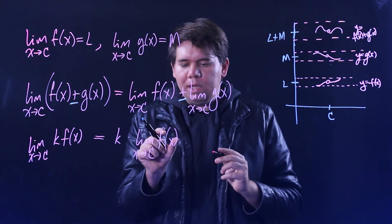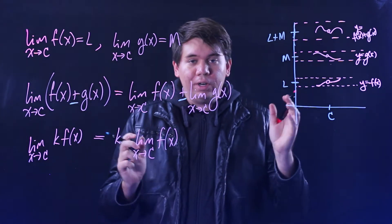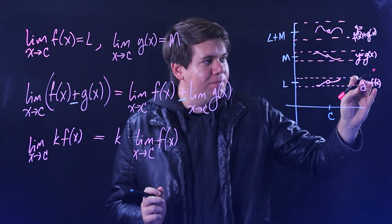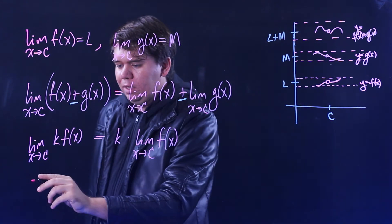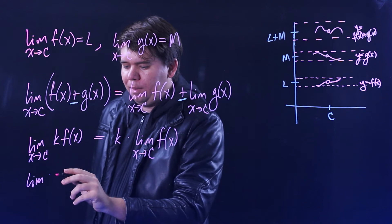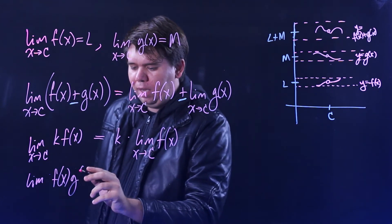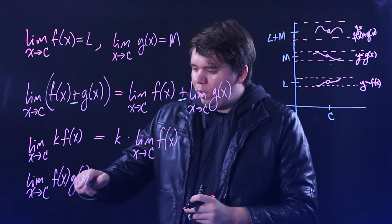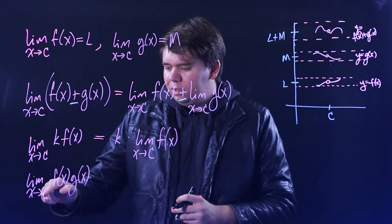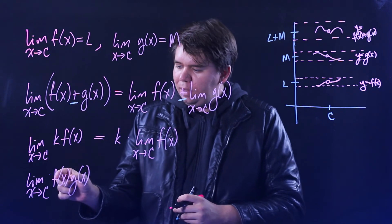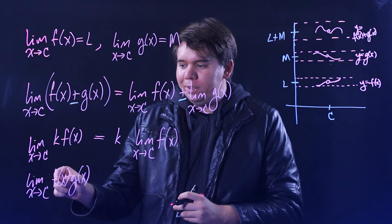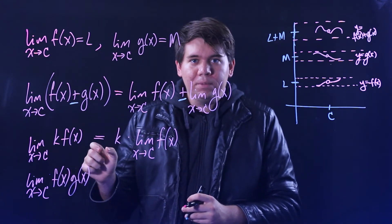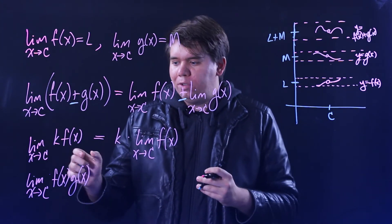In addition to multiplying a function by just a constant K, we can also multiply these functions together. You can look at the function formed by taking values of F and multiplying them by values of G. What's the limit of F of X times G of X? When you get closer and closer to C, for values sufficiently close to C, the values of f will be really close to L and the values of G will be really close to M.